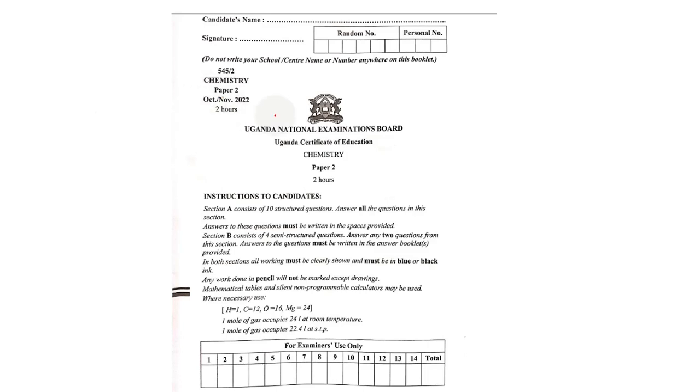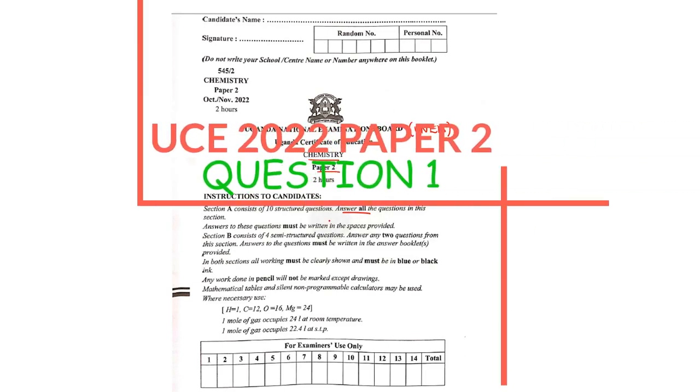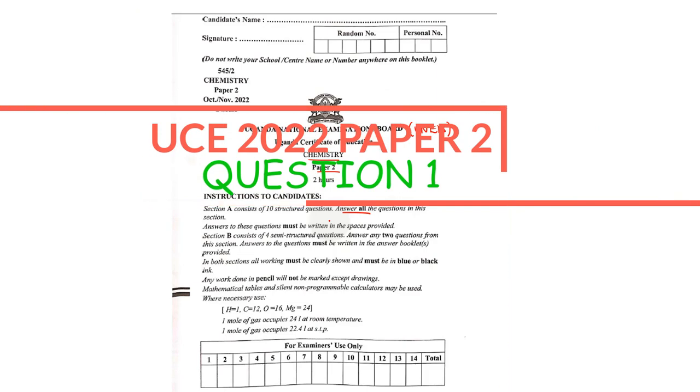Hello and welcome. We are going to look at the recently concluded Chemistry Paper 2, UCE, that is the June Uganda Examination Board. We're going to look at each question, starting with Section A, which is compulsory. Let's start with question one and see the best possible answers.